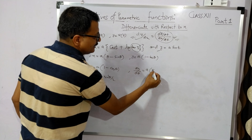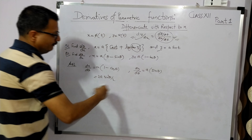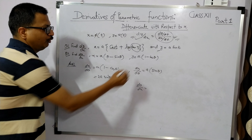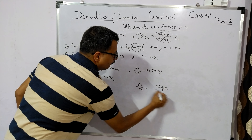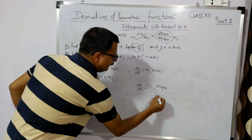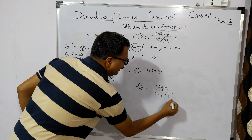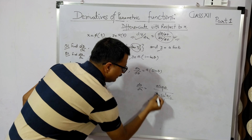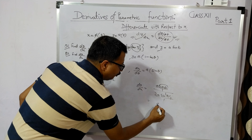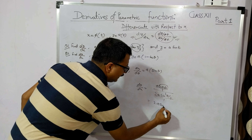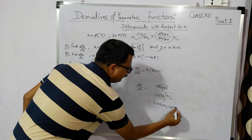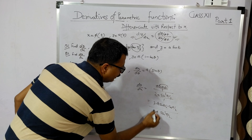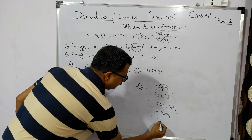dy/dθ = minus sin θ, minus into minus से plus sin θ आएगा। दोनों को divide करने पर: dy/dx = (a·sin θ) / (2a·sin²(θ/2))। इसको solve करते हैं: sin θ = 2·sin(θ/2)·cos(θ/2) रखने पर, 2a·sin(θ/2) और 2a·sin²(θ/2) cancel हो जाएंगे। Answer आएगा: cos(θ/2)।